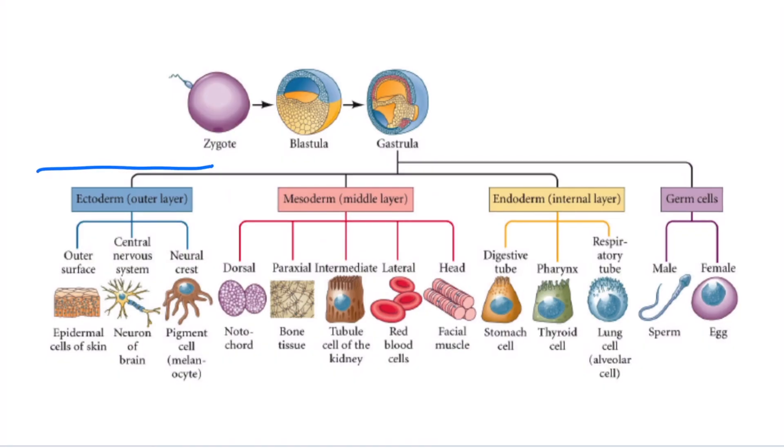Blue is for ectoderm. The ectoderm are the cells that remain on the outside surface of the embryo following gastrulation. These cells will form the nervous system and the skin.